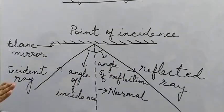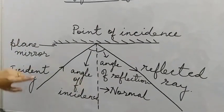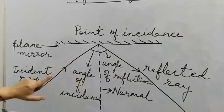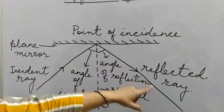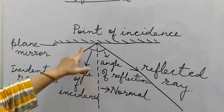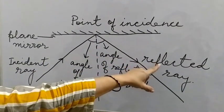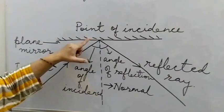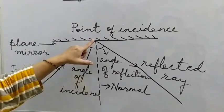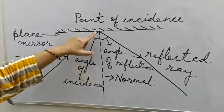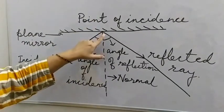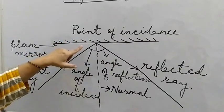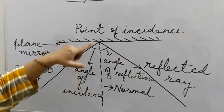Let me explain all the terms one by one. The ray of light coming towards the mirror is called incident ray. The ray of light which turns back after getting reflected from the mirror is known as reflected ray. The point of incidence is the point on the surface of the mirror where the incident ray falls. The normal is a line perpendicular to the surface at the point of incidence.